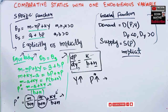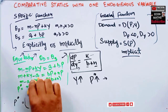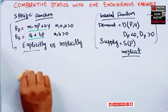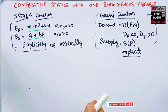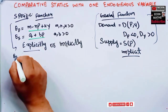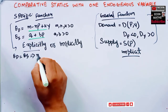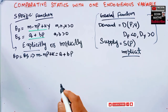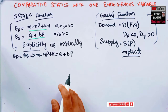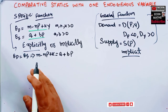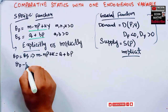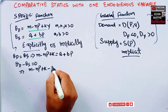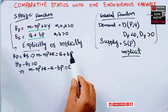We can also solve the same demand-and-supply model using the implicit method. Since quantity demanded must equal quantity supplied, we have: m minus nP plus kY equals a plus bP. In the implicit approach, we move everything to the left-hand side: QD minus QS = 0, which gives: m minus nP plus kY minus a minus bP = 0.